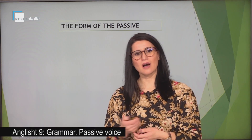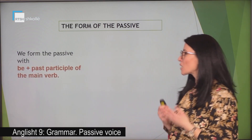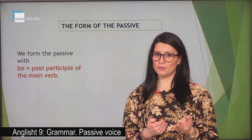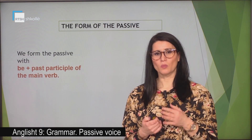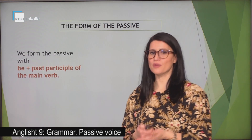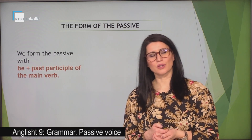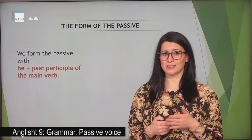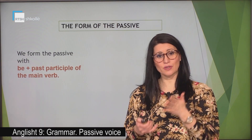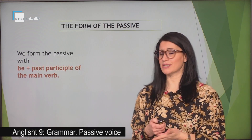Let's have a look at how we form passive. We form the passive with the verb 'to be' plus the past participle of the main verb. Be careful — the verb 'to be' should be in the same tense as the verb is in the active sentence.